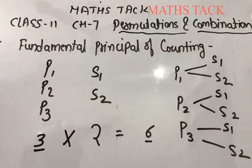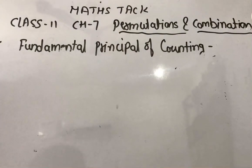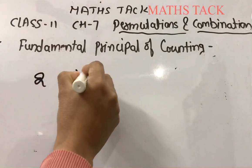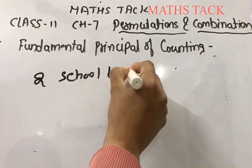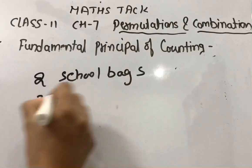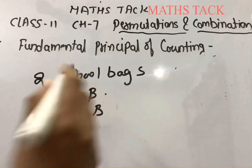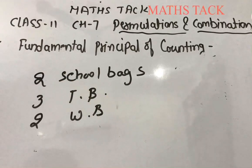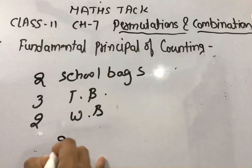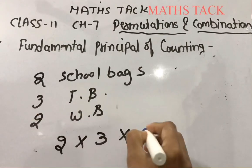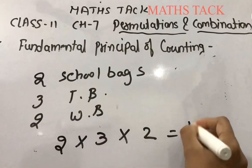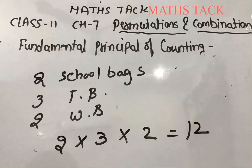A girl named Shabnam has two school bags, three tiffin boxes, and two water bottles. In how many ways can she carry these items? Of course, 2×3×2 equals 12 ways. There are 12 ways she can carry these items.